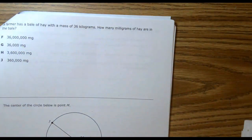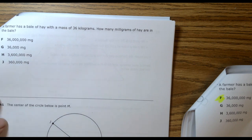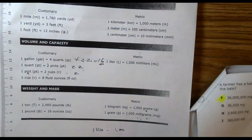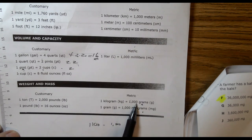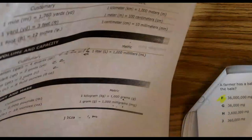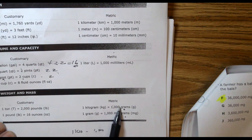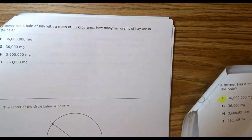Question forty: a farmer has a bale of hay with a mass of 36 kilograms. How many milligrams? From your reference chart: 1 kilogram equals 1,000 grams, and 1 gram equals 1,000 milligrams — so 1 kilogram equals 1,000,000 milligrams. With 36 kilograms, your answer is F.